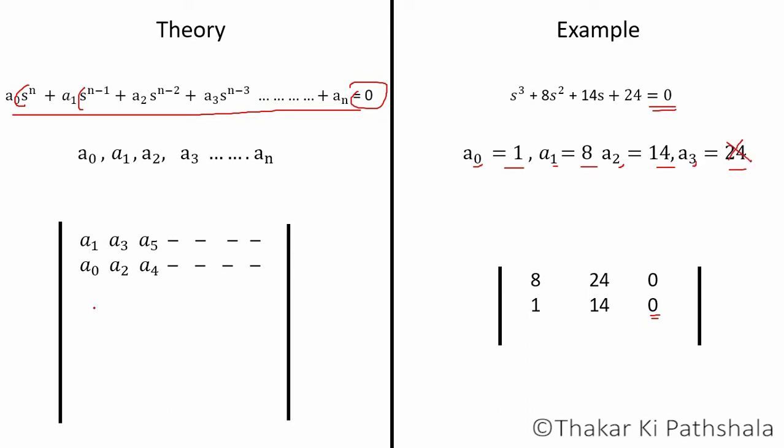Now to write third row of Hurwitz determinant, you have to do nothing. Just move the numbers of odd row to one place, means write here zero and then copy paste the first row. Just skip that last digit. For here we will shift our first row to one place and write here zero. Yeah, that's it, our determinant for this example is completed.